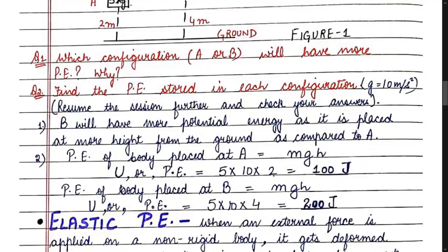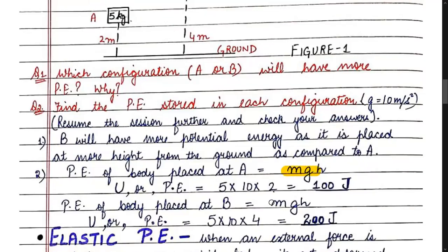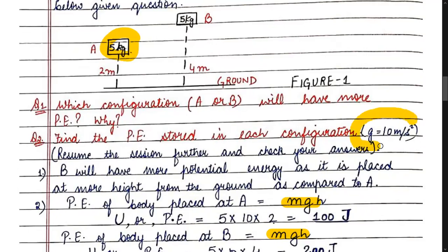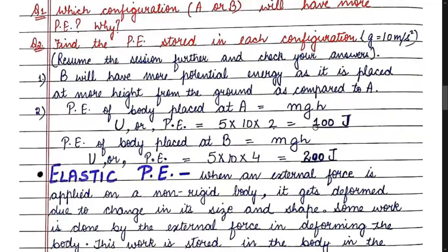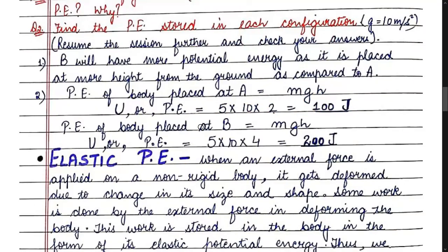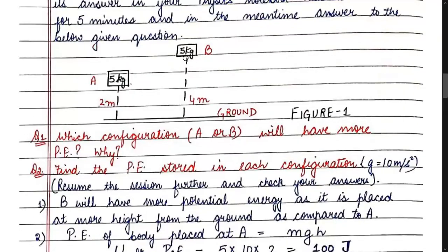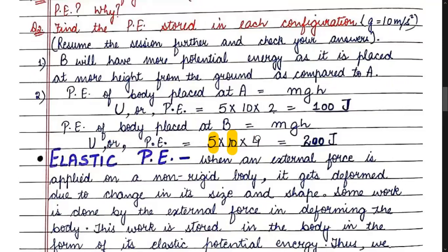To find the potential energy for A and B, we use the formula MGH. Mass = 5 kg, G = 10. For case A, height = 2 m: potential energy = 5 × 10 × 2 = 100 joules. For case B, height = 4 m: potential energy = 5 × 10 × 4 = 200 joules.